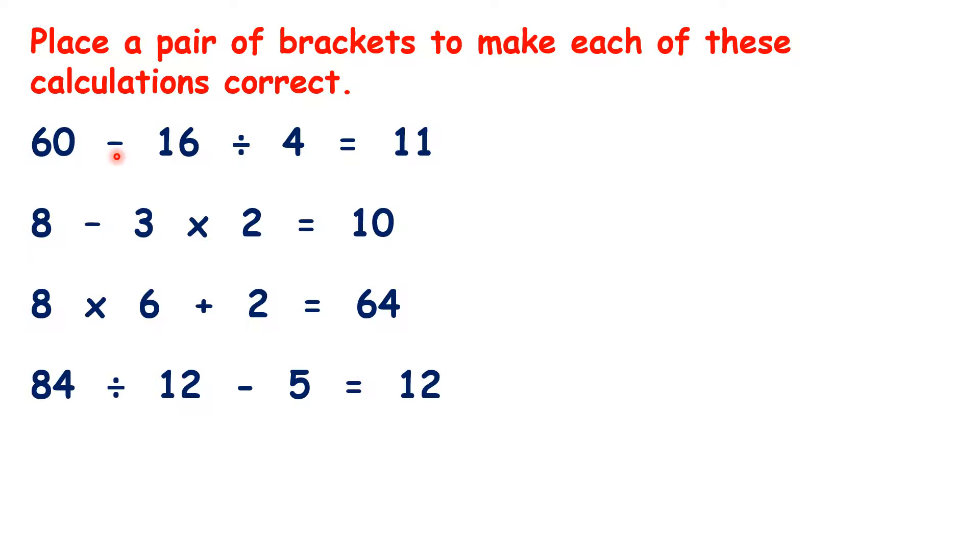So without brackets for this first question, we would do 16 divided by 4 to get 4, and then subtract 4 from 60 to get 56. But we need to include brackets to give the answer of 11. Where do the brackets go? Well, if we do 60 minus 16 first, we get 44, and 44 divided by 4 is 11.